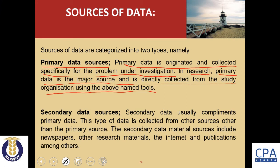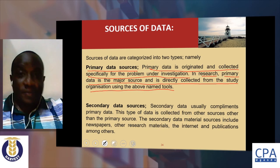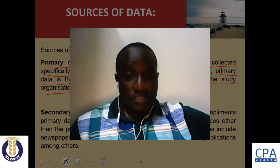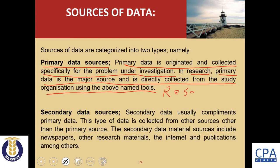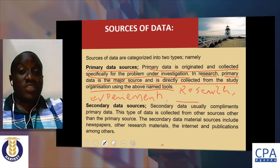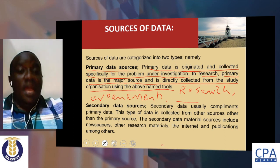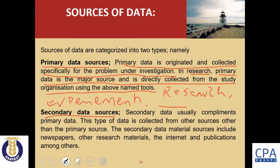The sources of primary data include: research, experiments, investigations, and case studies. Through these sources you can obtain original data. Research, case studies, experiments, and investigations are the four main sources of primary data.